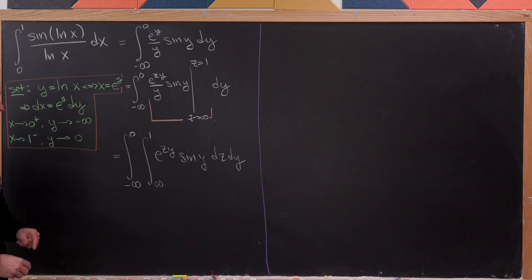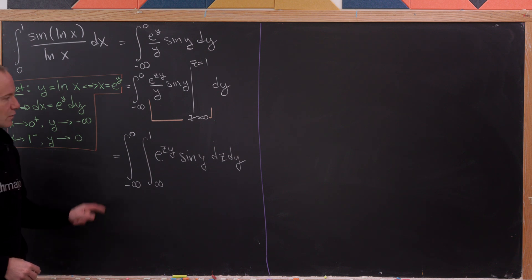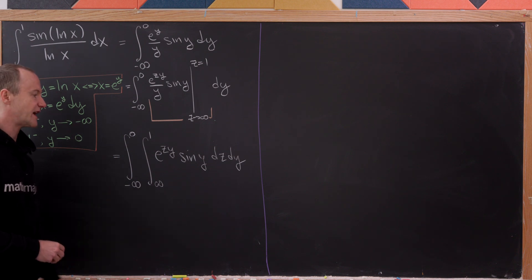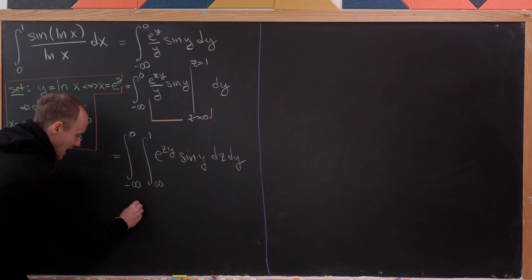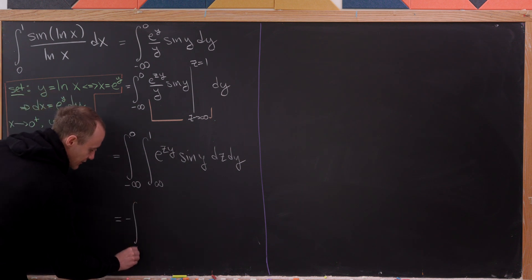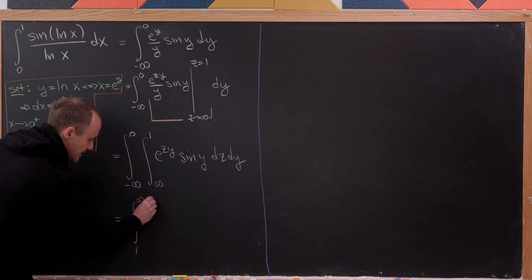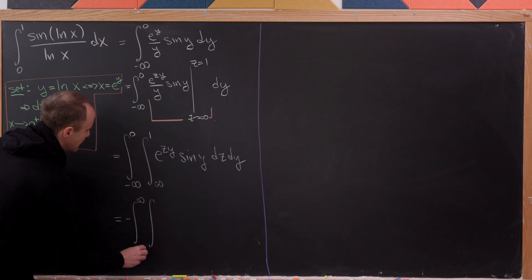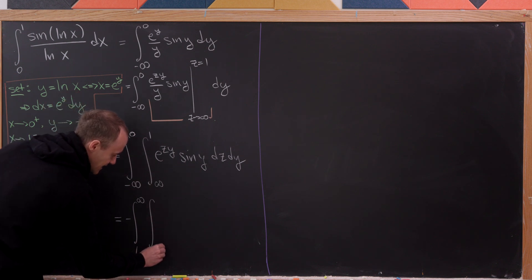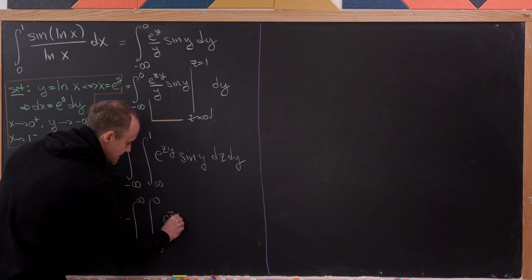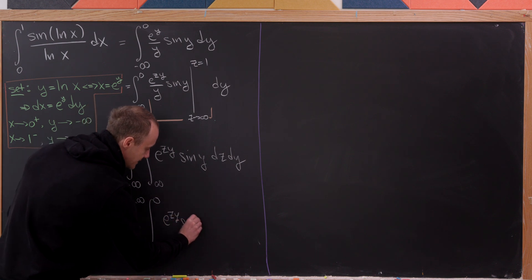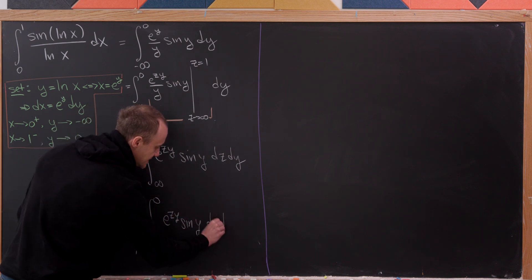We flip the z-integral bounds from infinity-to-1 to 1-to-infinity by introducing a minus sign, then change the order of integration. This gives minus the integral from 1 to infinity of the integral from minus infinity to 0 of e to the z times y times sine of y dy dz.